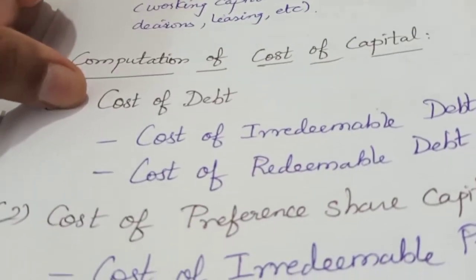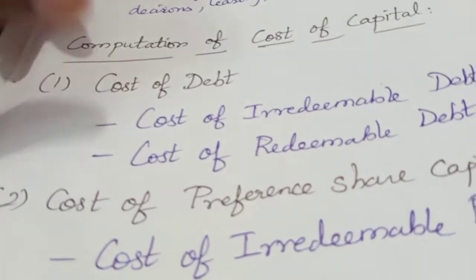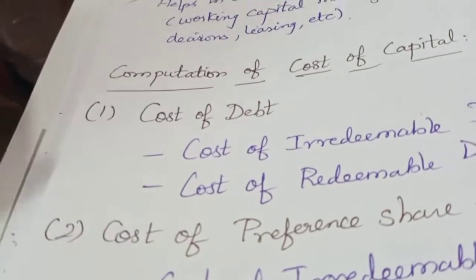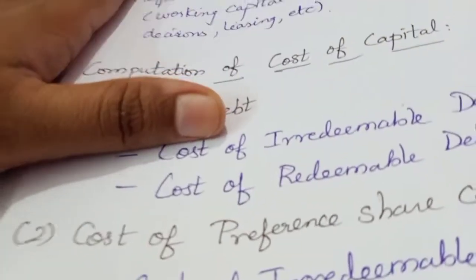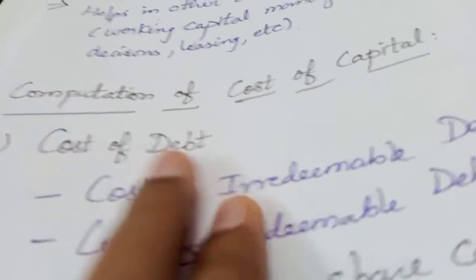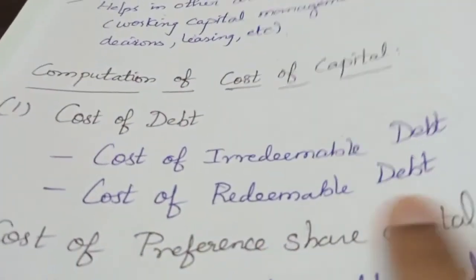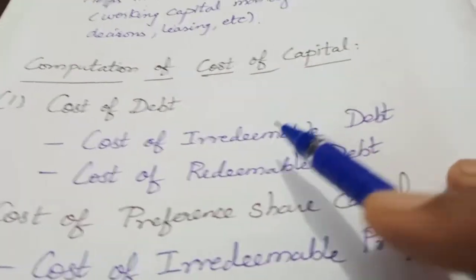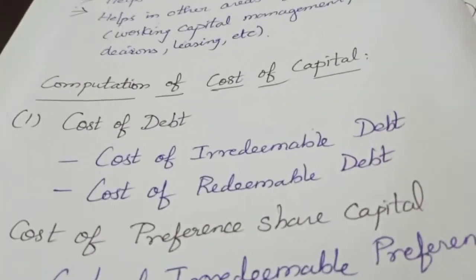First, we look at the cost of debt. When we raise a fund, there is a cost of debt. In the cost of debt, we have two types: cost of irredeemable debt and cost of redeemable debt.